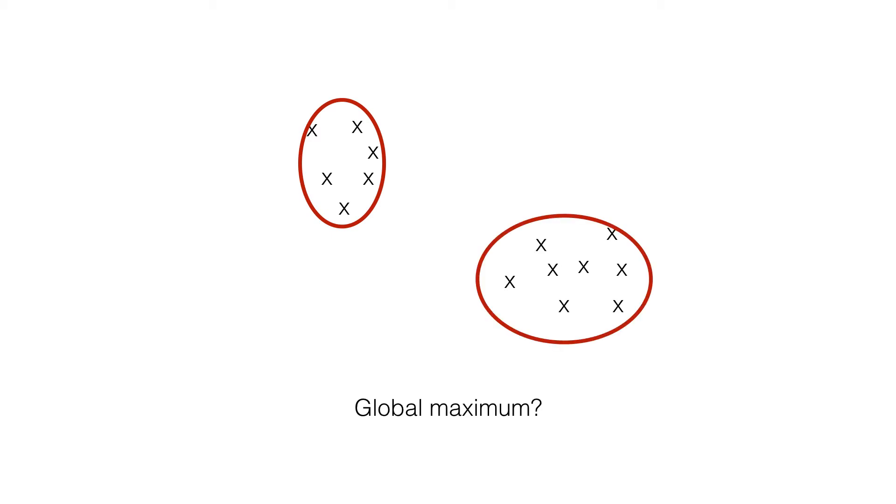And the question is, is this a global maximum of the likelihood function? Well, I just told you it isn't. But intuitively, it should be the best solution. So let me show you what leads to a global maximum that is not as good as this solution. And this is why is a degeneracy.